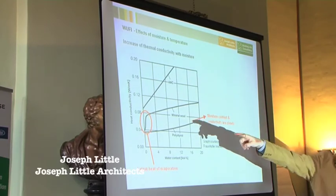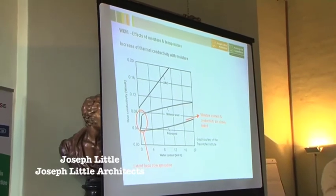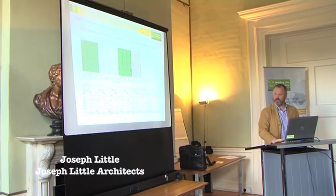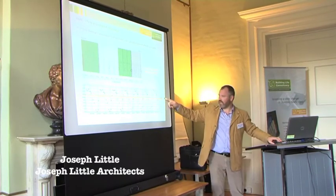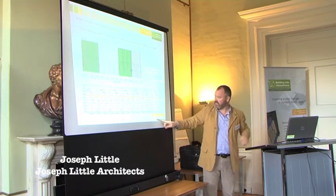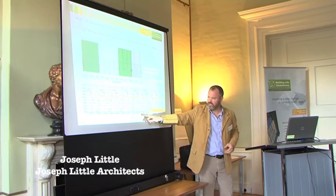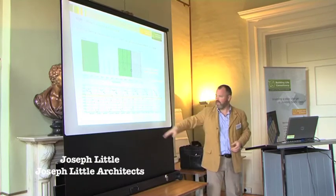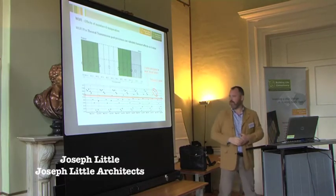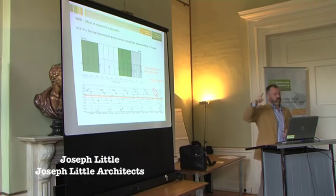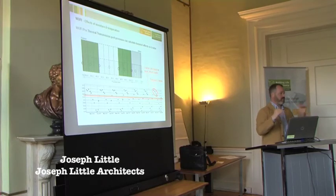When we look at aerated autoclaved blocks — Ytong/Celcon blocks for instance — it's the reason why there's a special block below the DPC line compared to above it, because water massively reduces the thermal performance. What this diagram shows is the difference between a steady state U-value and what's actually happening in the wall — transient U-values. Every summer, as insulation materials dry out, the actual thermal performance improves towards around 0.12 watts per meter squared Kelvin. But as driving rain and other factors affect the wall every winter, the thermal performance gets poorer. That cycle is increasing. Transient U-value measurement is now required by the German government — they're no longer happy with the static U-value because it misses too much of what's actually going on.